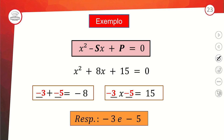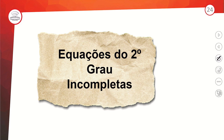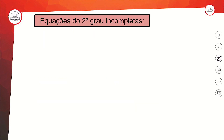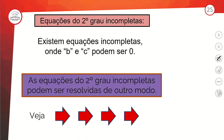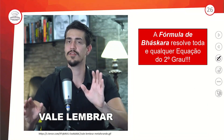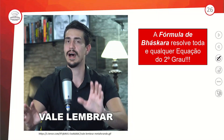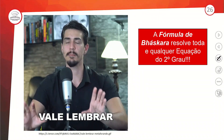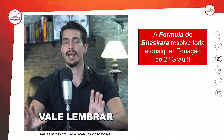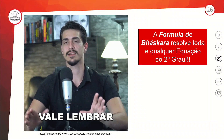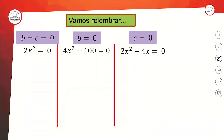Para avançar mais um pouco, temos as equações incompletas — aquelas que podem faltar o B ou o C. Em A, nunca pode faltar. A fórmula de Bhaskara resolve toda e qualquer equação do segundo grau; as incompletas só têm maneiras mais tranquilas de resolver, mas pode usar Bhaskara se preferir.